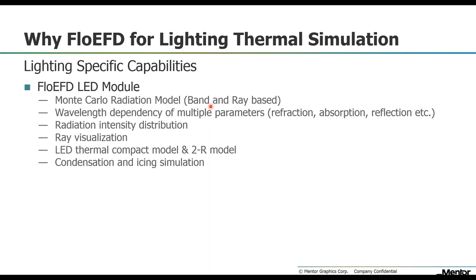Most CFD tools have a band-based radiation model where you specify specific wavelength bands, and within each band, values such as absorption, reflection, or refraction are averaged. If the band is not accurately defined, that can cause averaging errors and therefore errors in results. That's why we also created a ray-based model where each ray has basically one wavelength. You may need more rays, but it's just CPU time, and it doesn't need as much effort as specifying bands in detail.